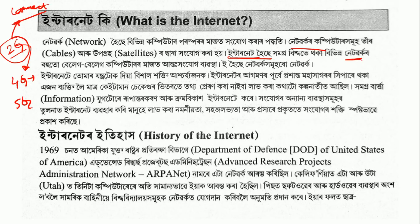We use the internet. The internet is very important with computers. If you want to use 4G data, you can use 4G data. In 1969, the Department of Defense of the United States of America Advanced Research Projects Administration Network — ARPANET — was established. The internet is very important.